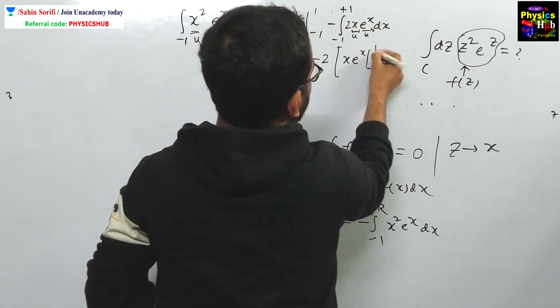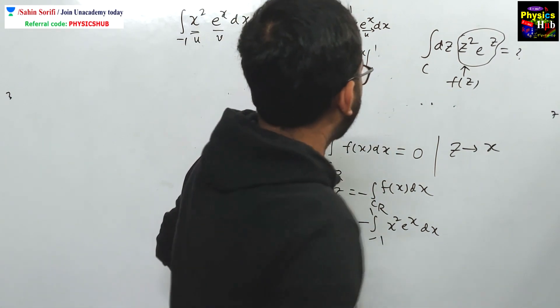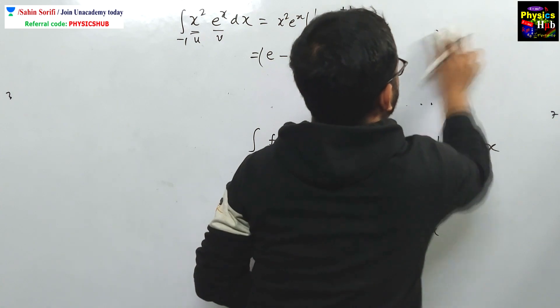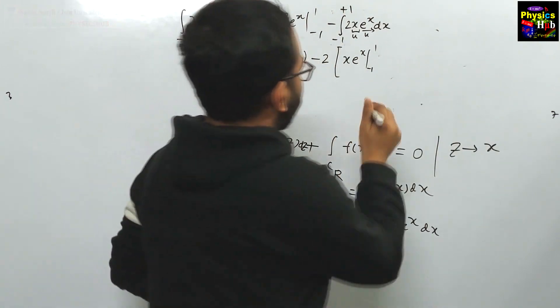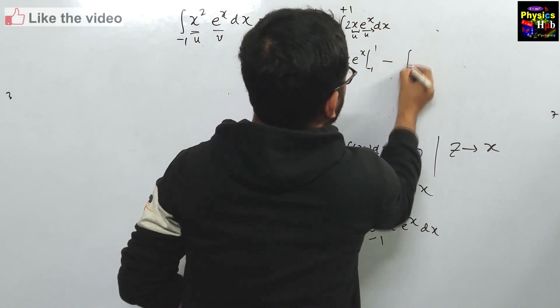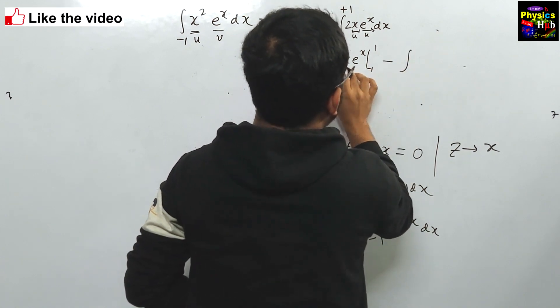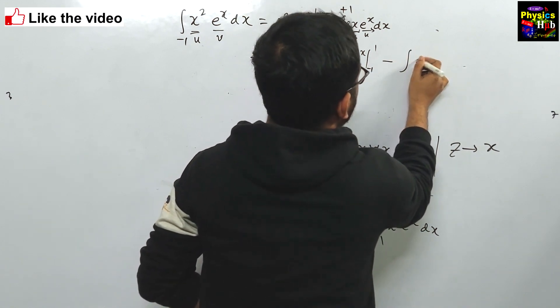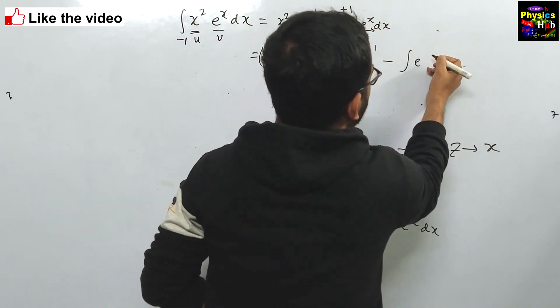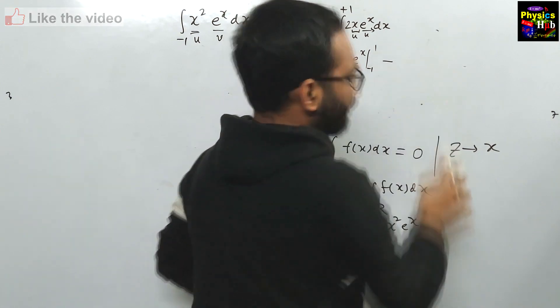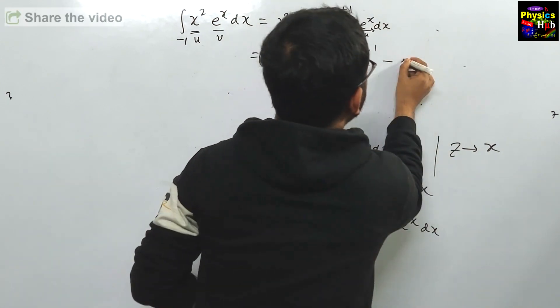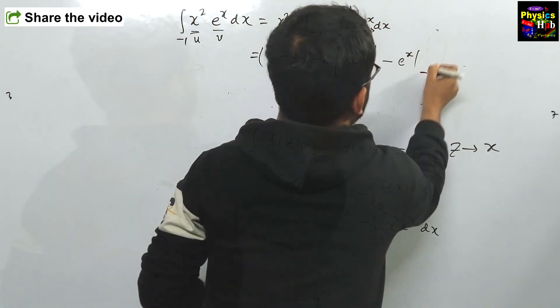x e^x running from -1 to 1. For the time being, I have to omit this one. Till now, everything is going smoothly, minus integration. Integration of this, derivative of x is 1, so e^x dx.